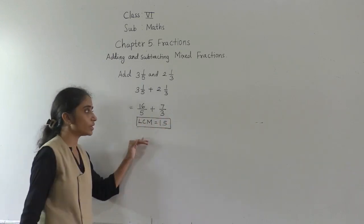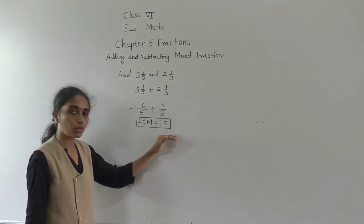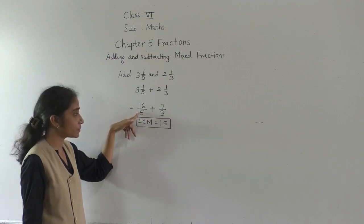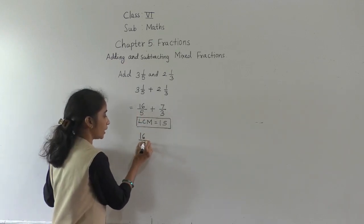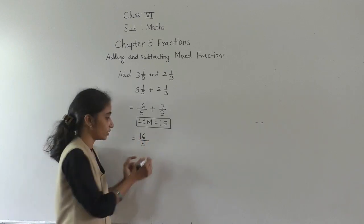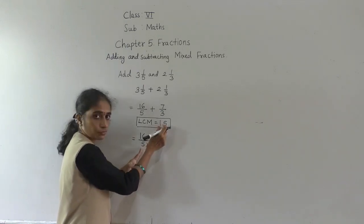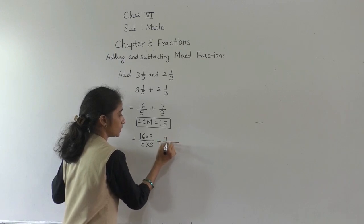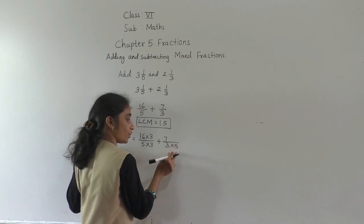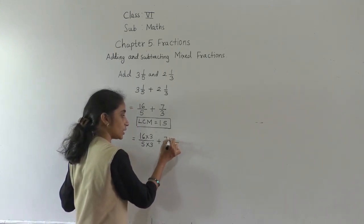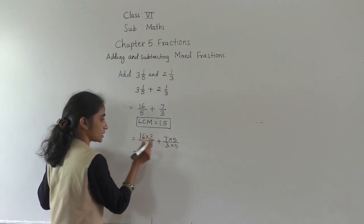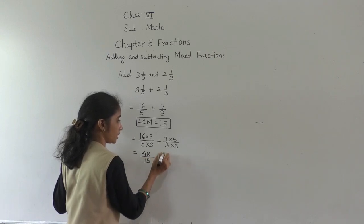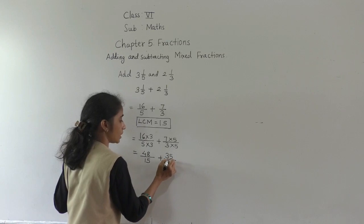We have to make the denominator 15. For 16 upon 5: 5 threes are 15, so multiply numerator and denominator by 3, giving 48 upon 15. Plus for 7 upon 3: 3 fives are 15, so multiply numerator and denominator by 5, giving 35 upon 15.